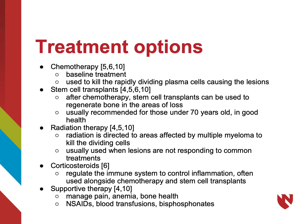Corticosteroids are sometimes used alongside treatments such as chemotherapy and stem cell transplants to regulate the immune system. Supportive therapy is used to treat the symptoms of multiple myeloma. NSAIDs can be used to manage pain, blood transfusions for anemia, or bisphosphonates to support bone health.